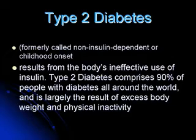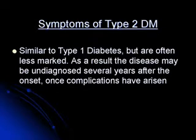The second type, type 2 diabetes, formerly called non-insulin-dependent or childhood onset, results from the body's ineffective use of insulin. Type 2 diabetes comprises 90% of people with diabetes around the world, and is largely the result of excessive body weight and physical inactivity. Symptoms of type 2 DM are similar to type 1 but are often less marked, and the disease may be undiagnosed several years after onset once complications have arisen.